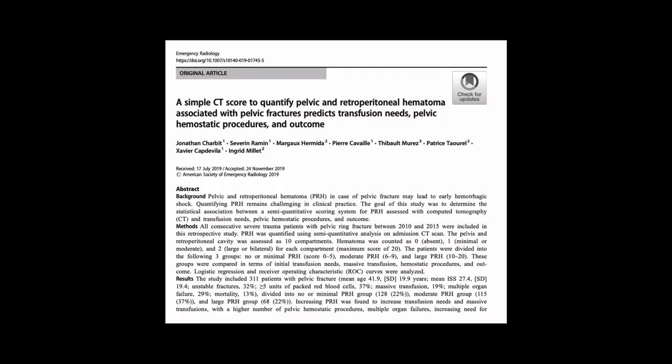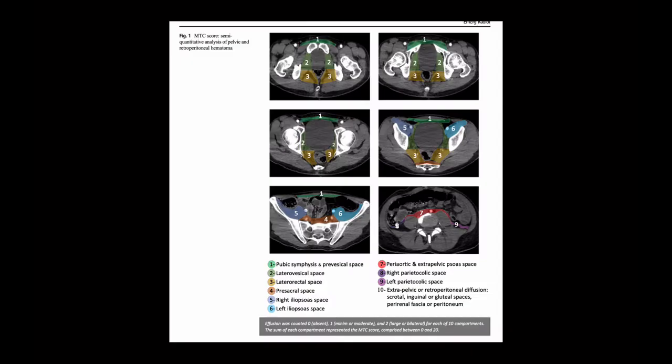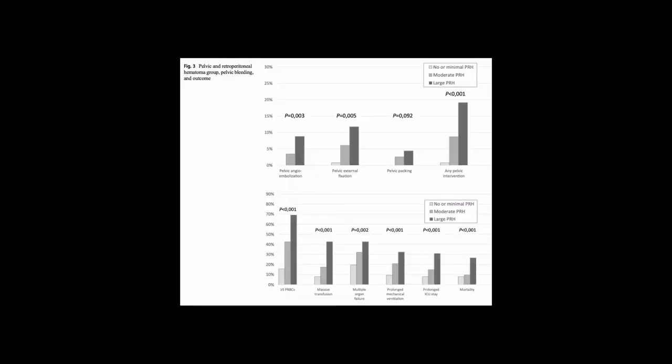Similarly, when you look at the retroperitoneum, various studies have developed scoring systems specifically looking at how much blood you should give a patient before you intervene. What seems clear is that whenever you have a constellation of fractures leading to presacral bleeding, periaortic bleeding, and bleeding extending to the left and right paracolic spaces, it's more than you'd like — and it's associated with higher rates of transfusion and intention to treat with embolization.